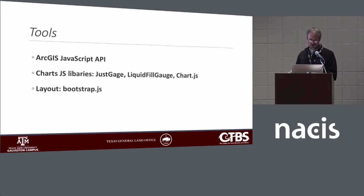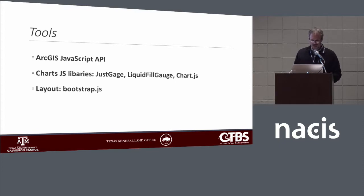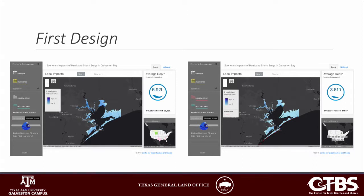To do this, we used the ArcGIS JavaScript API and a couple of JavaScript libraries outside of that for some of our linked views. For the layout, we used Bootstrap, which was helpful. This is what our first beta design looked like — we had some users take a few minutes to explore through a focus group, which I'll talk about in a minute.